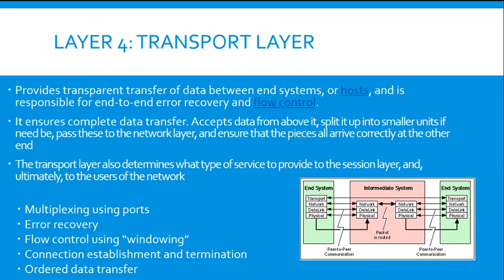The fourth layer is the Transport layer. It provides transparent transfer of data between hosts and is responsible for end-to-end error recovery and flow control. It ensures completed transfer, accepts data from above, splits it into smaller units if needed, passes them to the network layer, and ensures all pieces arrive correctly at the other end. The transport layer determines what type of service to provide to the session layer and ultimately to the user. Its functions include multiplexing user ports, error recovery, flow control using windowing, connection establishment and termination, and ordered data transfer.